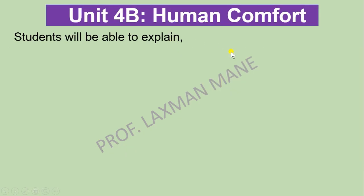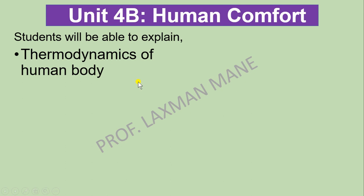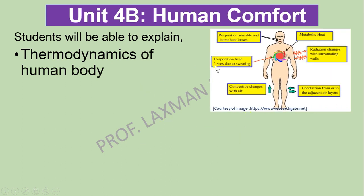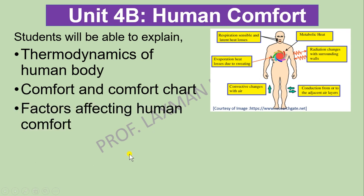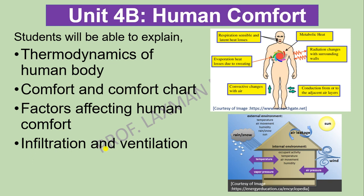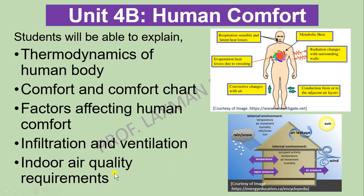Part B covers human comfort, including the thermodynamics of the human body. Here different kinds of heat entering and leaving the body will be studied. Topics include comfort and the comfort chart, and factors affecting human comfort such as temperature, humidity, purity, and cleanliness. Infiltration and ventilation is a concept required in heat load calculation, and indoor air quality requirements for clean room concepts are also included.